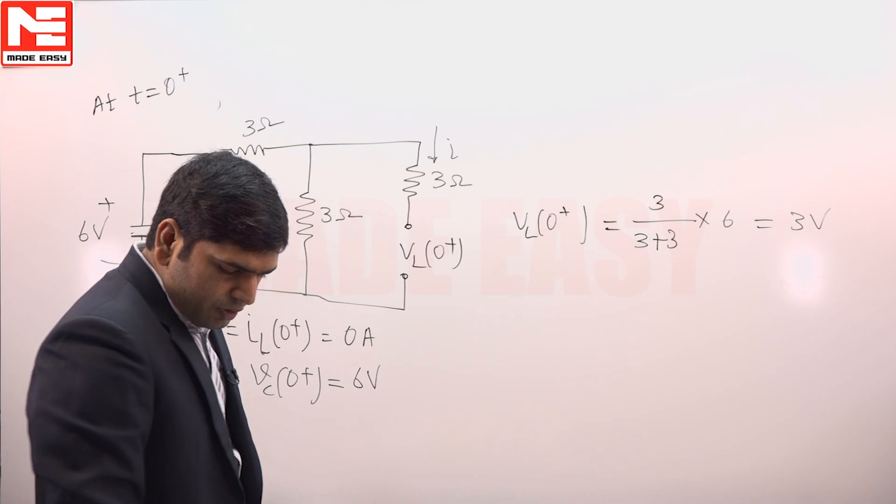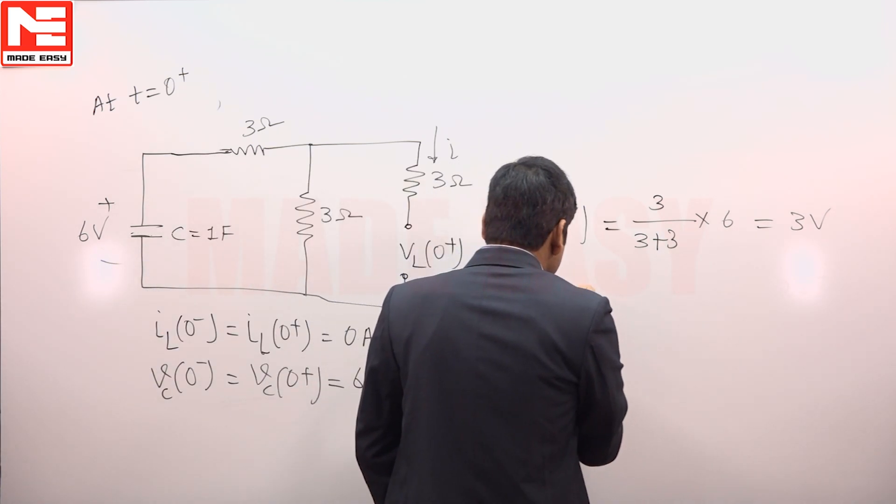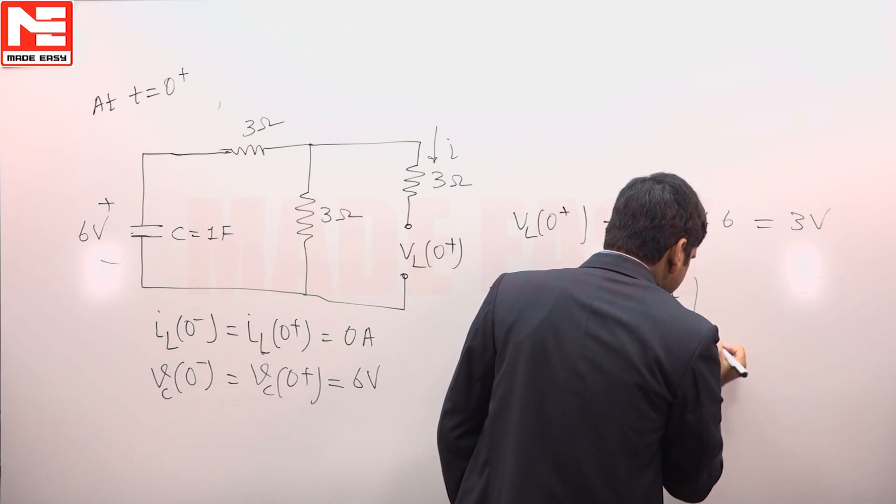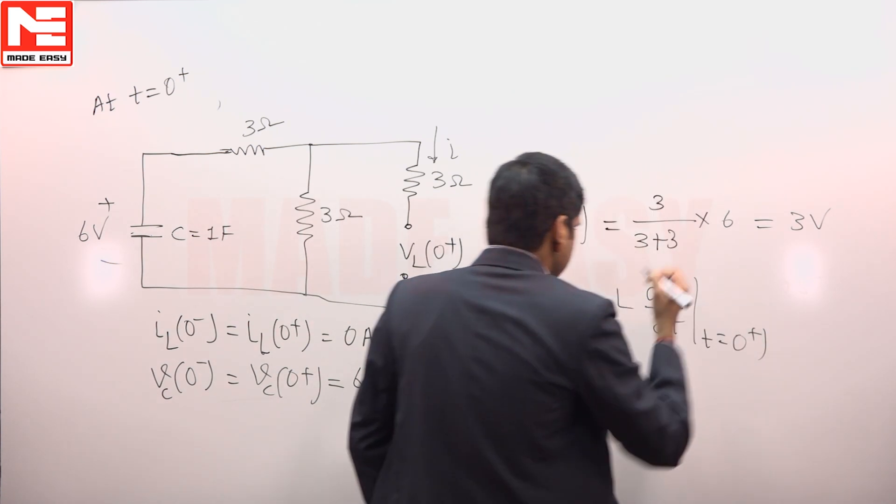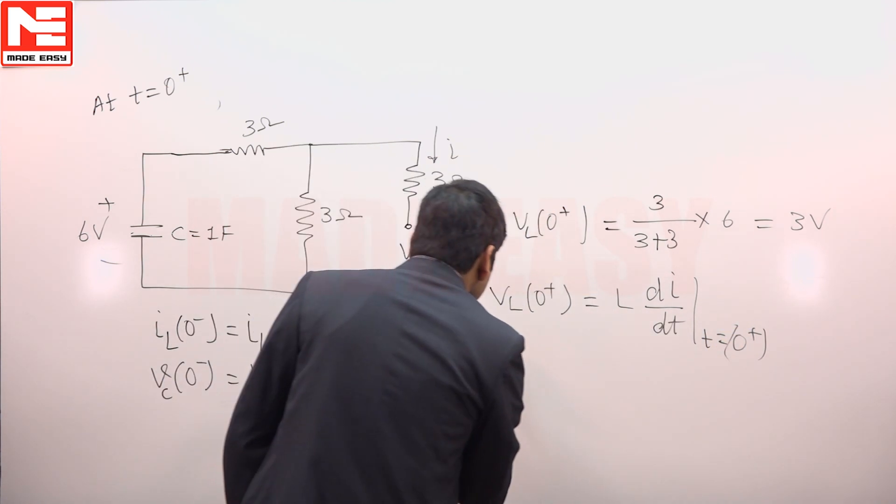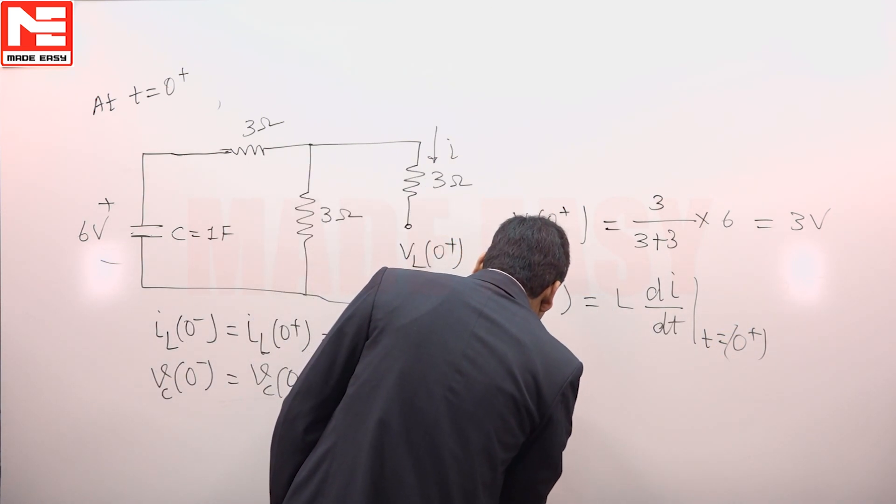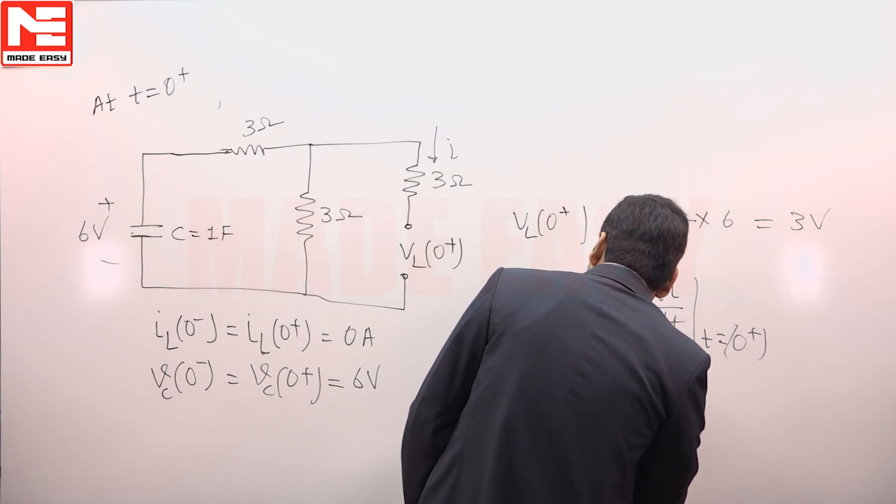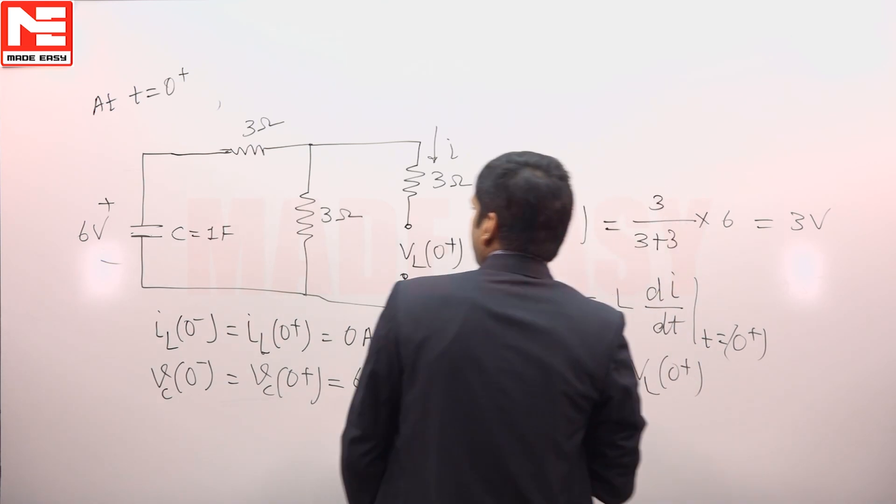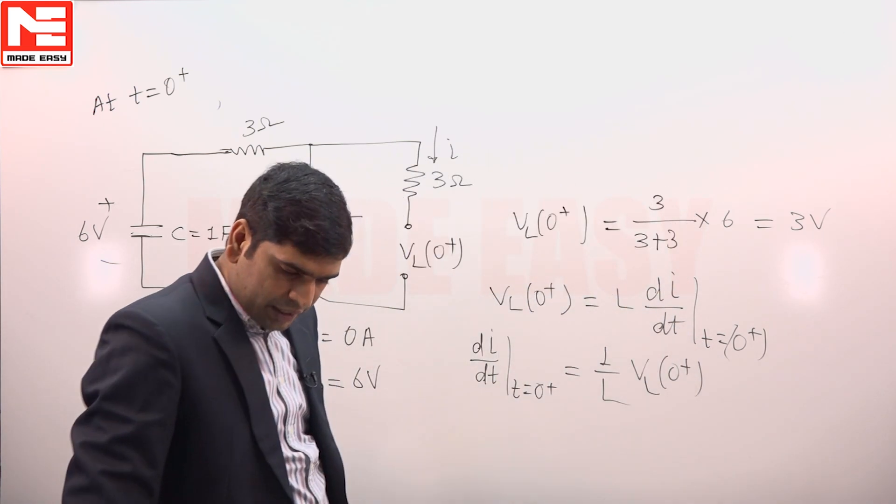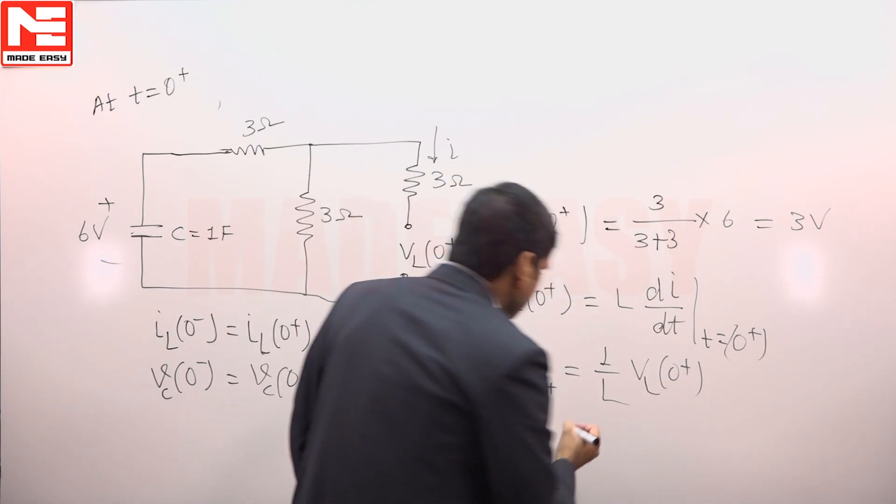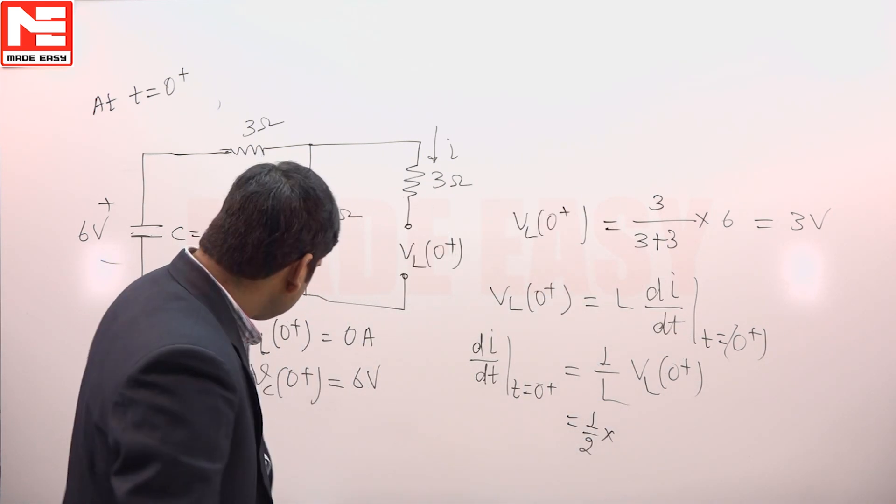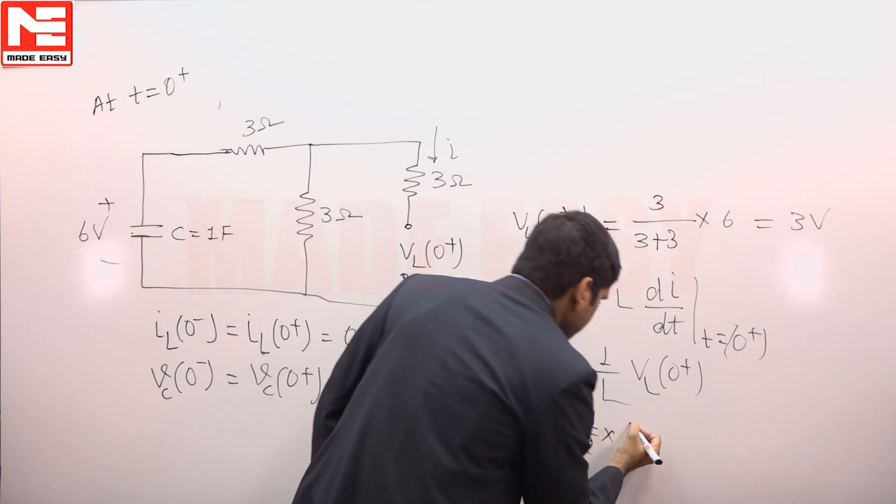Now VL(0+) is equal to L di/dt at t equals 0+, and we need to calculate this current di/dt at t equals 0+. It is 1 by L, VL(0+), 1 by L. L value is given as 2 Henry, so 1 upon 2 into VL(0+). VL(0+) is 3 volts that we have calculated.